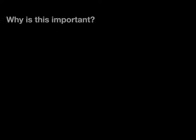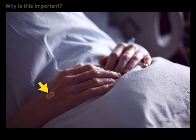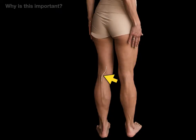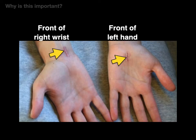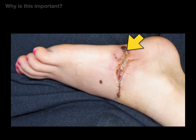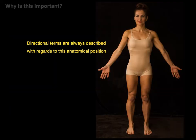Why is this anatomical position important? Describe that mole — it is on the back of the right hand. Describe the location of that scar — it's on the back of the left knee joint. Describe these two scars from carpal tunnel release — that's the front of the right wrist, and that's the front of the left hand. How about this scar? That's on the dorsal and lateral surface of the right foot. Directional terms are always described with regards to this anatomical position.